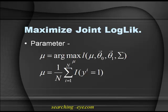The parameter mu is obtained by maximizing the joint log likelihood over mu. Maximizing gives: mu equals 1 over n, summation over all i from 1 to n of the indicator function of (yi = 1). This indicator function returns 1 if y equals 1 and 0 otherwise. As we already saw in logistic regression with the Bernoulli distribution, p(y=1) equals mu, and this is what we get from this maximization.